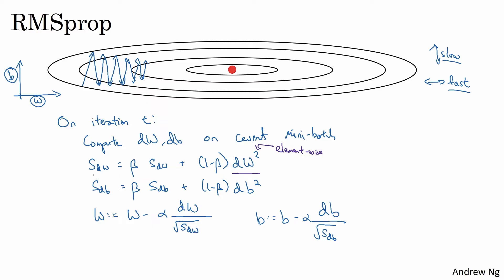So with these terms, sdW and sdB, what we're hoping is that sdW will be relatively small, so that here we're dividing by a relatively small number. Whereas sdB would be relatively large, so that here we're dividing by a relatively large number in order to slow down the updates in the vertical direction.